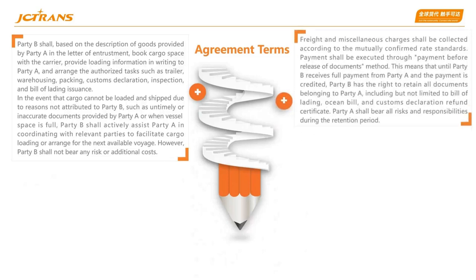Freight and miscellaneous charges shall be collected according to the mutually confirmed rate standards. Payment shall be executed through the payment-before-release-of-documents method. This means that until Party B receives full payment from Party A and the payment is credited, Party B has the right to retain all documents belonging to Party A, including but not limited to the bill of lading, ocean bill, and the customs declaration refund certificate. Party A shall bear all risks and responsibility during the retention period.